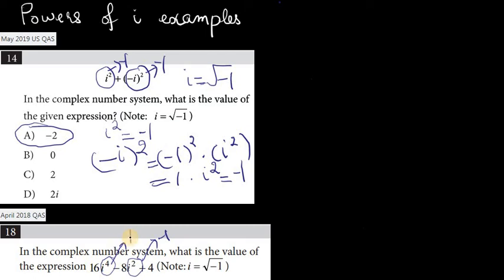So 16 times a 1 would just be 16, so all this thing right here is 16. And then this thing would be 8 times a negative 1, that would be a negative 8 actually. And then you have a positive 4 here, sorry.